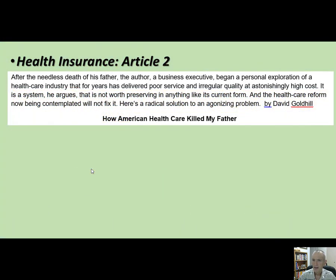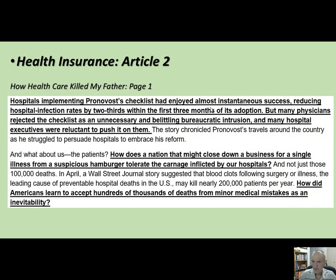The second article has the provocative title 'How American Healthcare Killed My Father' by David Goldhill, who is a journalist. The first article was more of an economist type; Goldhill is a journalist who studies healthcare. He wrote an article I believe in the New York Times and then converted it into a book. We're just going to focus on the highlighted parts of the article, and I'll let you know where each piece falls in the rubric.